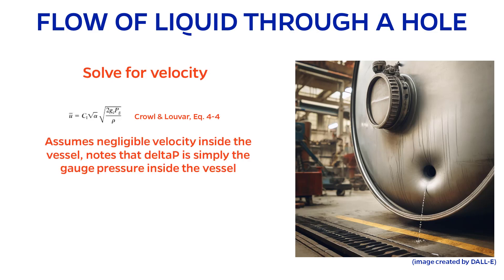This enables us to solve for the exit velocity of the liquid. Keep in mind that here I've assumed that the velocity right inside the hole is negligible, and that delta P is simply the gauge pressure inside the hole, since the outside should be atmospheric.